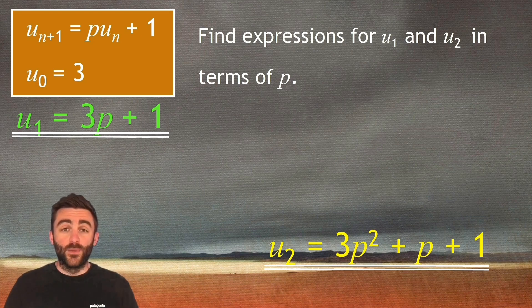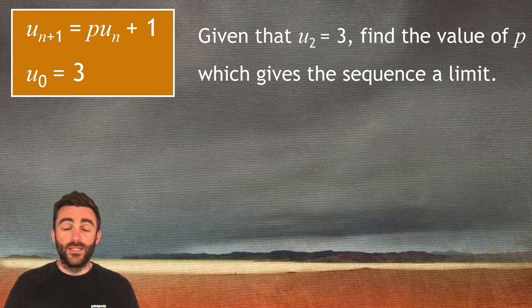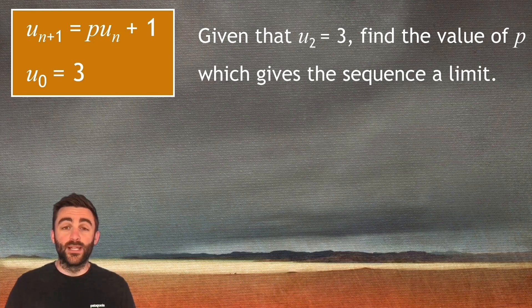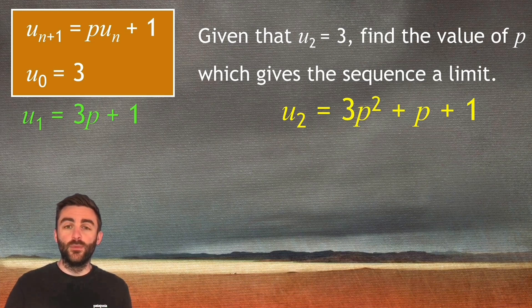Now usually in these questions there will be a part b and part b will say something like given now that u_2 is equal to three, find the value of p which gives the sequence a limit. So part b has actually presented us with new information u_2 is equal to three. So let's think about what we found already. u_1 was equal to three p add one and u_2 was equal to three p squared add p add one.